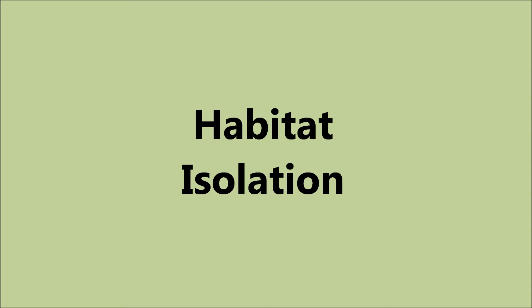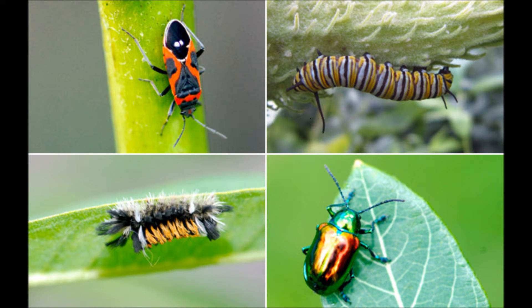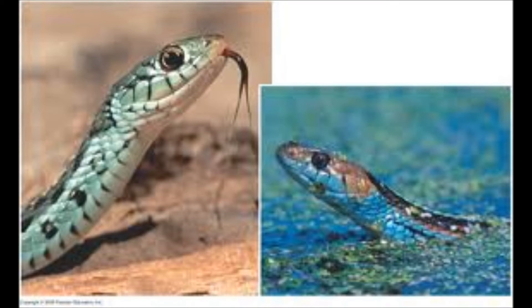Let's start with habitat isolation. Species occupy different habitats; therefore, they do not even have the opportunity to mate. An example of these are insects using different plants in the same area, or the water-dwelling versus the terrestrial garter snake.